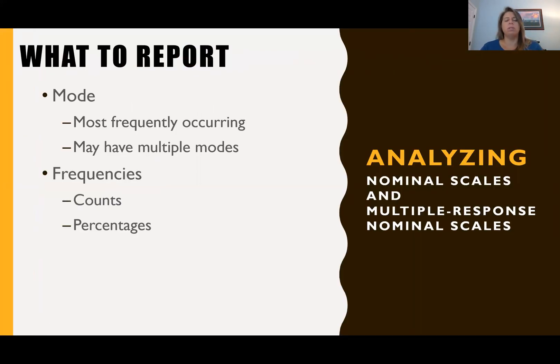So now the question is, what do we report? When we're analyzing the data, when we're analyzing these nominal and multiple response nominal scales, what can we report? Well, we can only do two things. First is mode, which is the most frequently occurring category, and sometimes we might have multiple modes, especially if we have multiple response nominal scales. We can also report frequencies and these might be reported in terms of counts or percentages. You'll find that in my class I tend to use percentages rather than counts because it helps make the data and the insights a little more clear for clients, but we can only use mode and frequency.